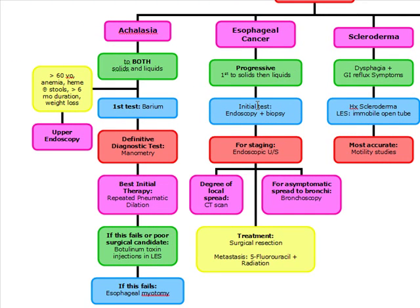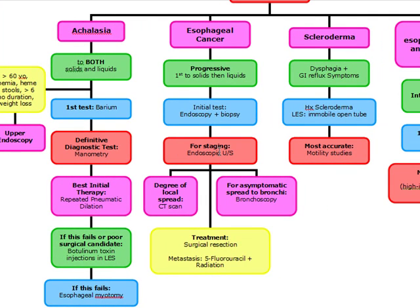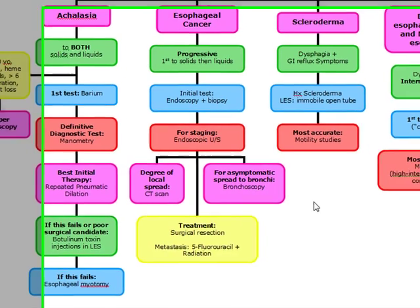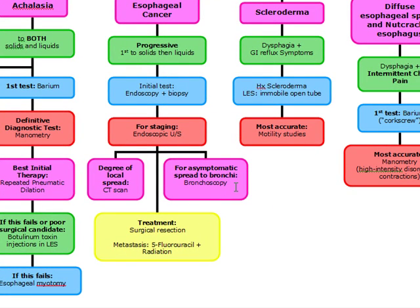For esophageal cancer, our initial test is going to be endoscopy and biopsy. If positive, for staging we're going to use endoscopic ultrasound. To check the degree of local spread, we're going to do a CT scan. To check for asymptomatic spread to the bronchi, we're going to do bronchoscopy. Treatment is going to be surgical resection if there is no metastasis. If there is metastasis, we're going to do both chemo and radiation therapy.